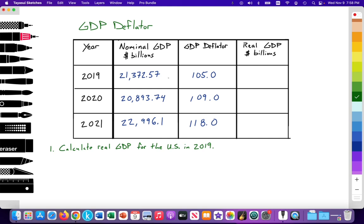We notice that the nominal value decreased from $21,000 to $20,000, which could potentially indicate some reduced aggregate demand — perhaps a fall into a recessionary gap — and then it rises from $20,000 to $22,000. The year 2020 suggests this fall in nominal GDP is likely due to the COVID pandemic: the lockdown, reduced aggregate demand, as people were mandated to stay at home and could not spend.